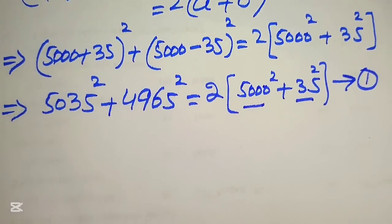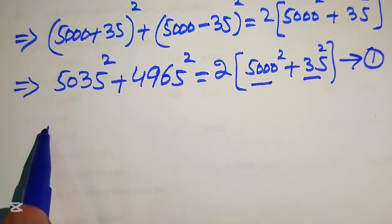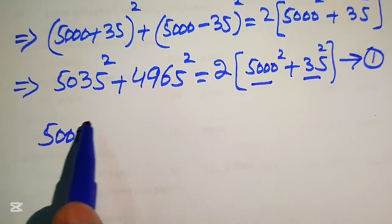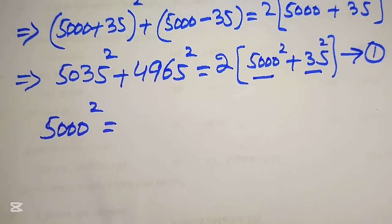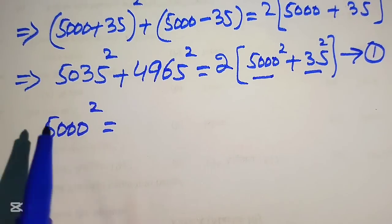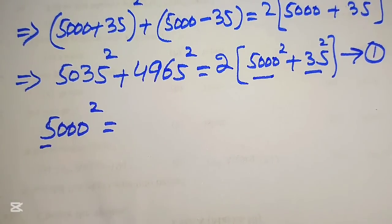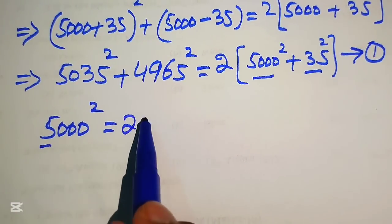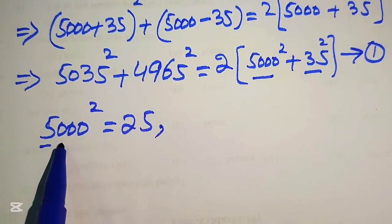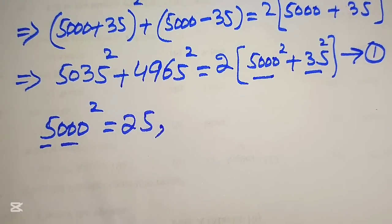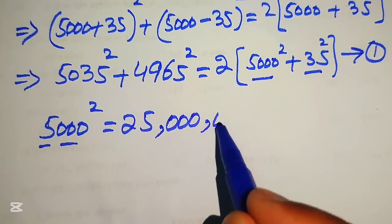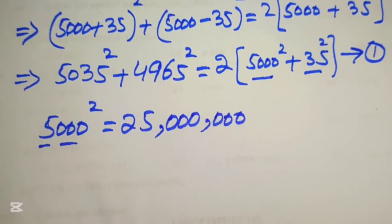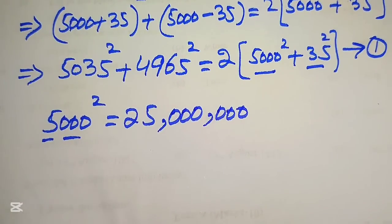To move forward we compute each square without a calculator. For 5000²: we know 5² = 25, and squaring the three zeros doubles them to six zeros, so 5000² = 25,000,000. This is a simple way to find the square of 5000.